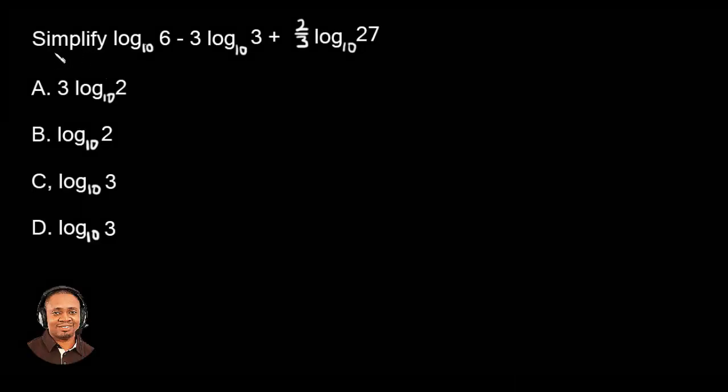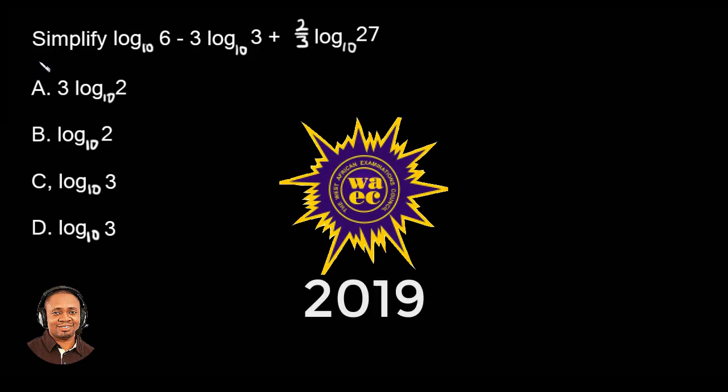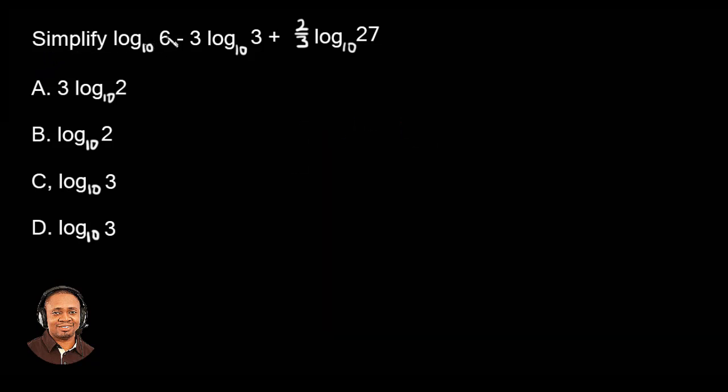Hi, I'm Oluwakemi. I'm so excited to have you here again. This is another WAEC Math Question 2019 which goes this: Simplify log 6 base 10 minus 3 log 3 base 10 plus 2 over 3 log 27 base 10. If you're familiar with logarithm law and indices law, I think we should be able to dive into this question.